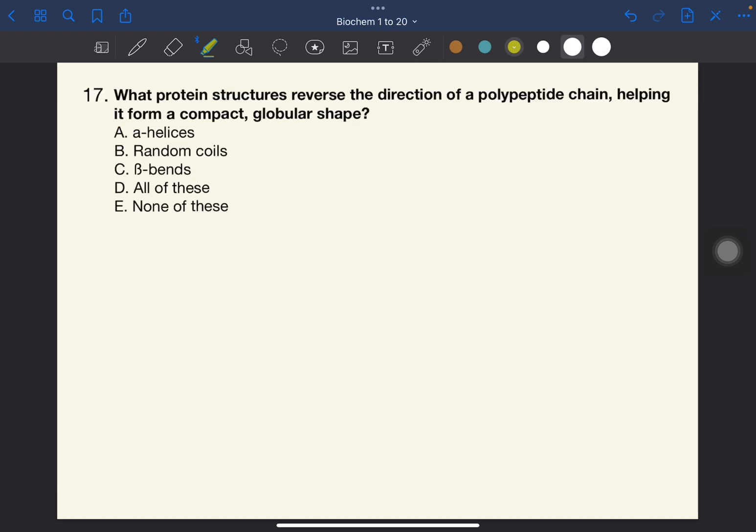Number 17. What protein structures reverse the direction of a polypeptide chain, helping it form a compact globular shape? The answer to this one is C, beta-bends. As said in the question, beta-bends reverse the direction of a polypeptide chain.